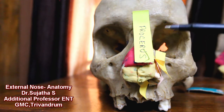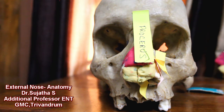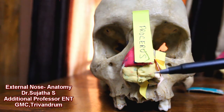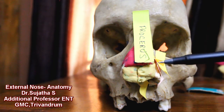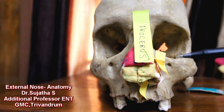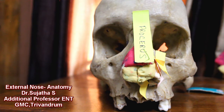The skin over the tip of the nose contains numerous large sebaceous glands. The importance of this is that hypertrophy of the sebaceous glands of the nasal tip will lead to rhinophyma, also called the potato nose.